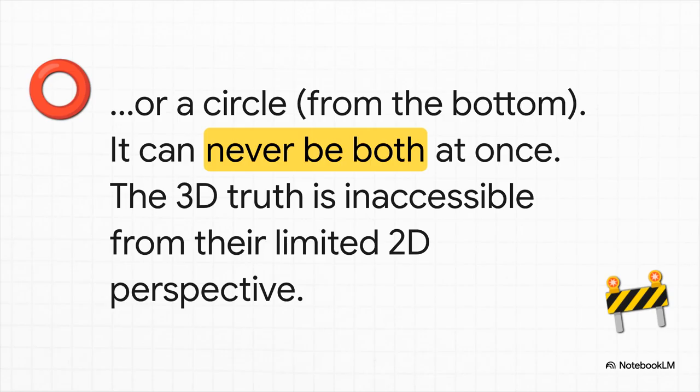Because of their either-or logic, they can argue forever. Neither of them can ever grasp that the object is both a triangle and a circle. The higher, 3D truth of cone is just fundamentally beyond their limited frame of reference. And maybe that's us. And look,